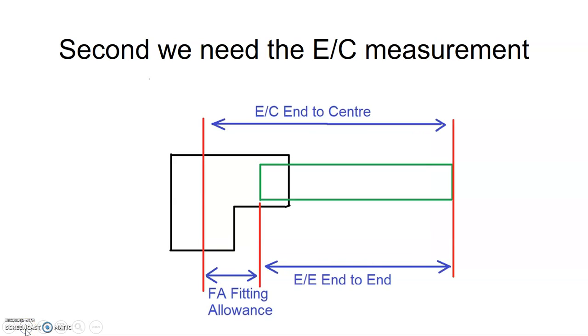The next thing we need to do is find the end-to-center measurement. Now that we've fully engaged our pipe into our fitting, and this is dry-fitted, we take the measurement from the end of the pipe all the way to the center of the fitting that we just engaged our pipe into, and that is our end-to-center measurement.